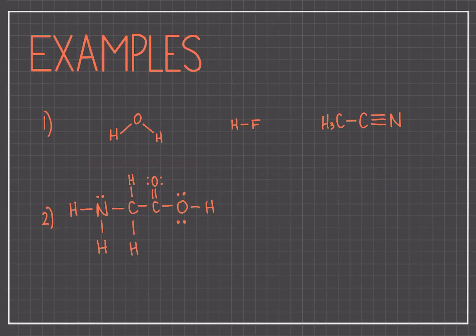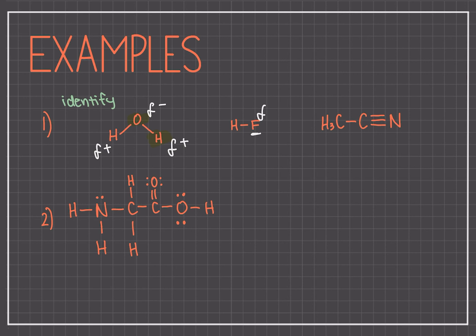Now let's move on to some examples. In question number one, we're going to identify which atom is partial negative and which atom is partial positive — these are all polar covalent bonds. In the first one, we have an OH bond. Oxygen is further to the right and has almost a full valence shell compared to hydrogen, which has only one proton. So oxygen is going to be much more electronegative — it's going to be the partial negative, and the two hydrogens will be partial positives.